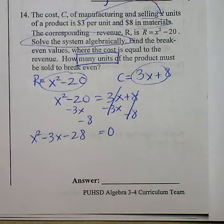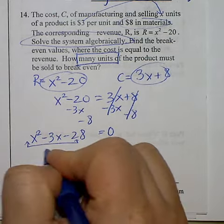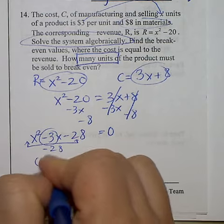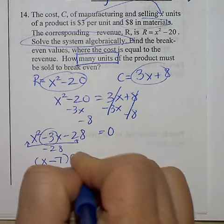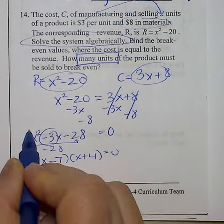You could always use the quadratic formula, or you can use the completing the square method. So two numbers that multiply to equal negative 28 and combine to give you negative 3 would be X minus 7 and X plus 4. We don't have to do bottoms-up since the leading coefficient is a 1.